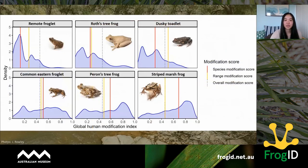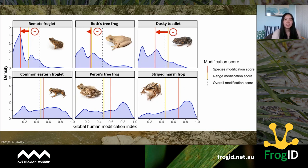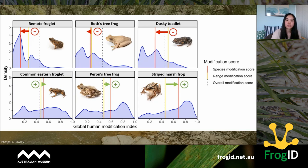Here are a few more example species. Species with a negative modification index — where the red line is to the left of the yellow line — tend to occur in relatively unmodified habitats within their geographic range, so they're quite intolerant of human-driven habitat modification. Those with a positive modification index tend to occur in modified areas within their range, so they're generally quite tolerant. The larger the positive value, the more tolerant the species — and in this graph, the most tolerant species is the striped marsh frog.